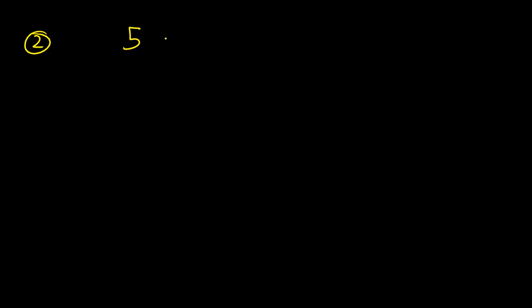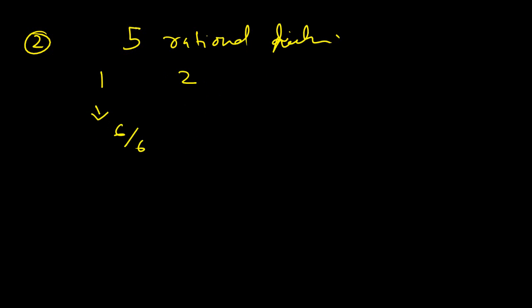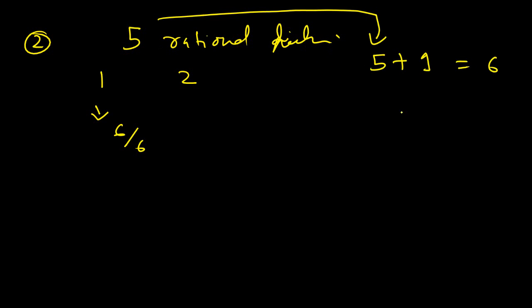There is a second way of doing it, and you can get it easily. We need to find 5 different rational numbers, and the extreme numbers are 1 and 2. Since there are 5 rational numbers to be found, we take the base as 5 + 1, which is 6. If there are n rational numbers, you always add 1 and take that as the base. Since n is 5 here, we take 6 as the base. So, we represent 1 as 6/6. How do we represent 2 in the same fashion? As 12/6.